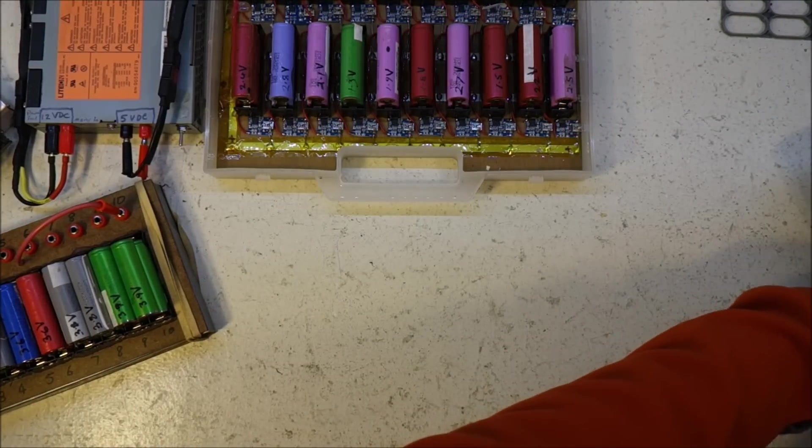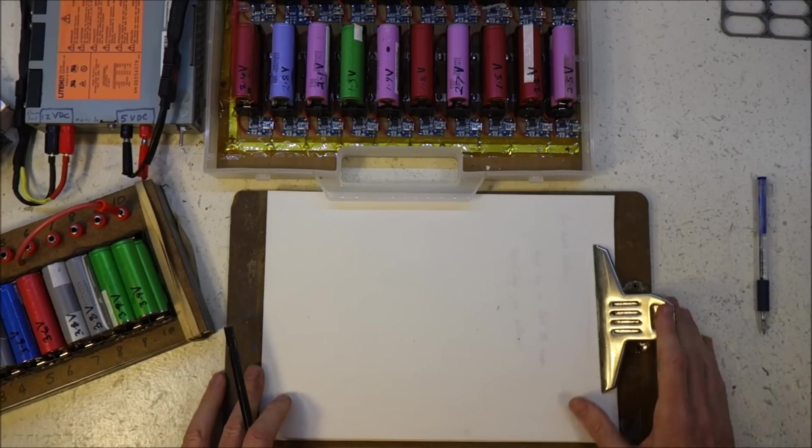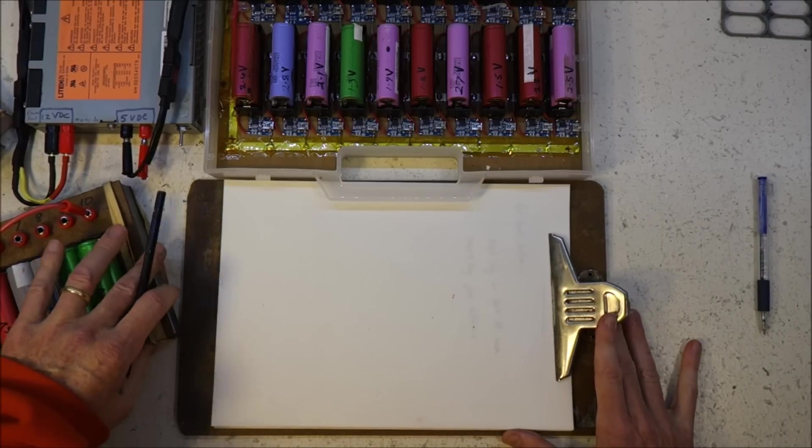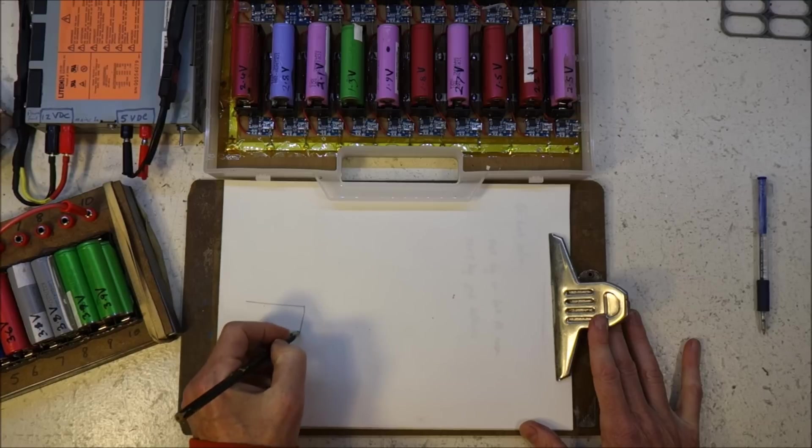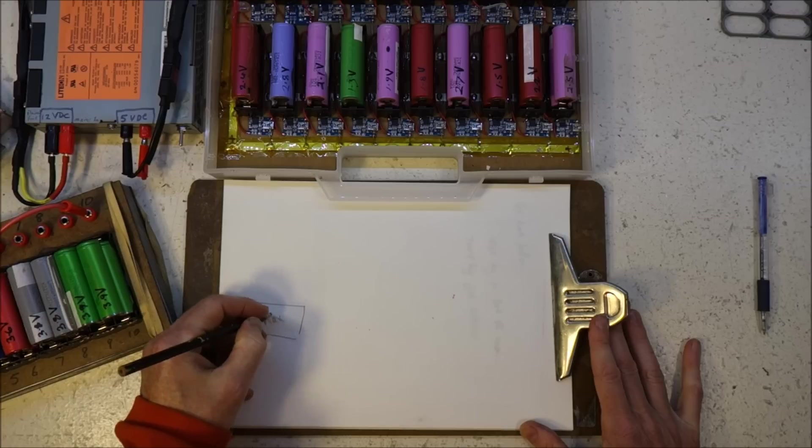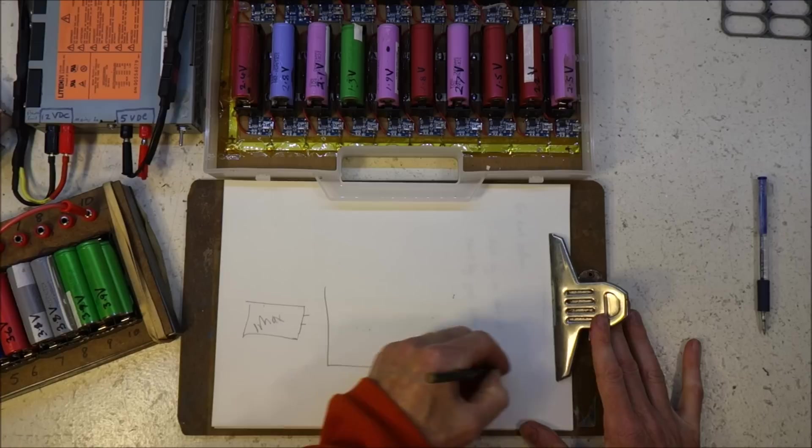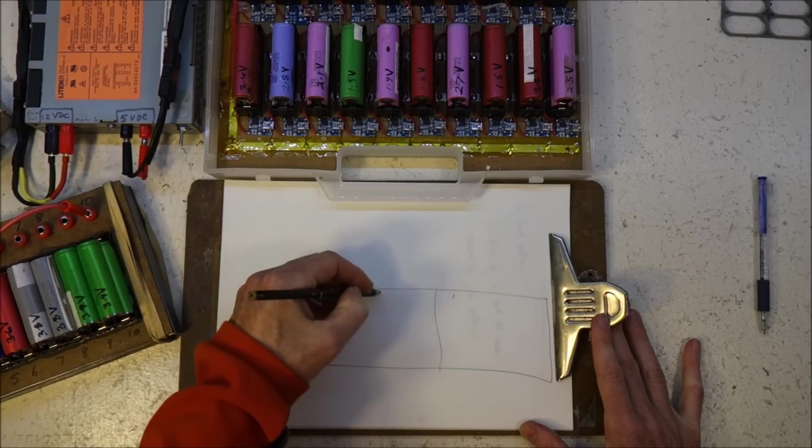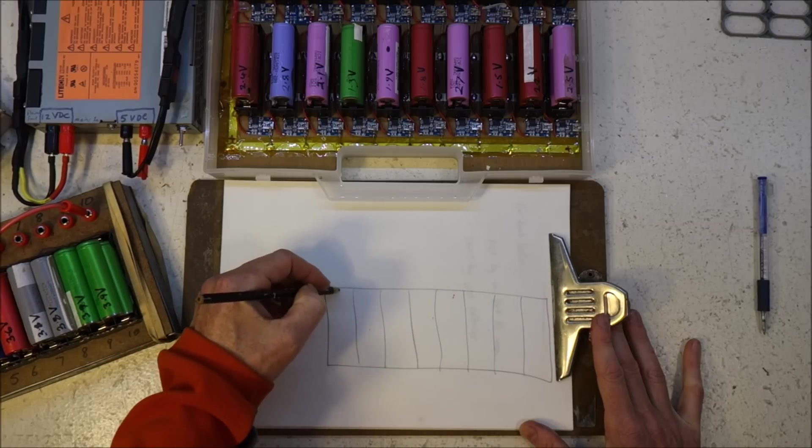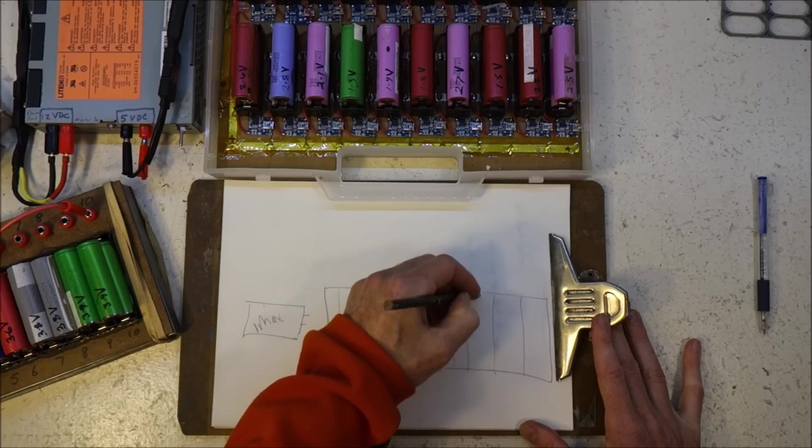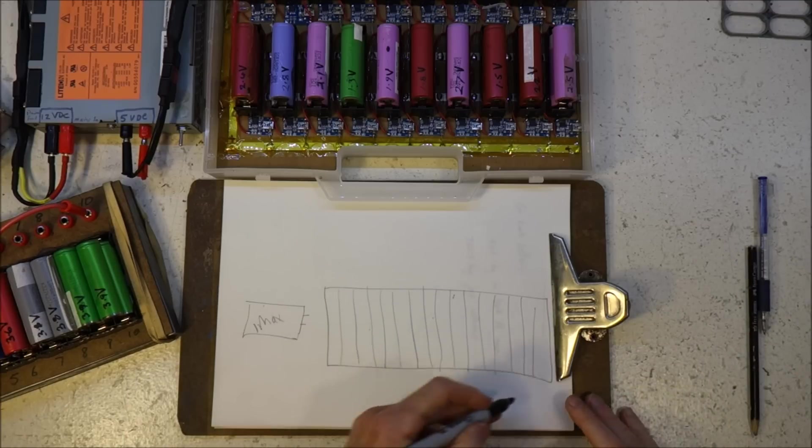And then there's the way that Jacob Garcia does it, which is to wire a whole bunch of cells in parallel. And I'll just draw how he does that because it's quite simple. He's got an IMAX B6 with the main charging leads. And then he has 16 battery holders, which is quite a lot.